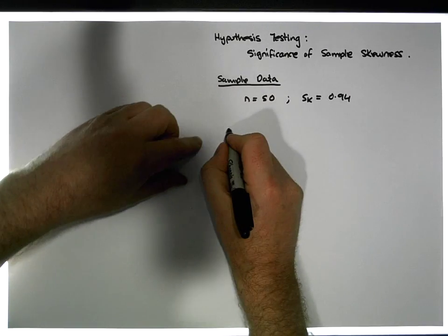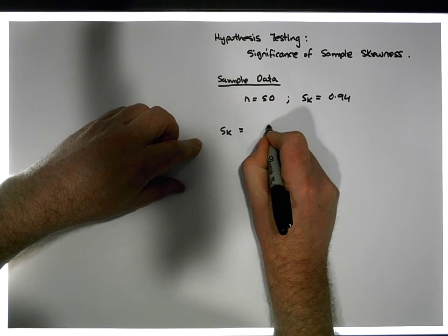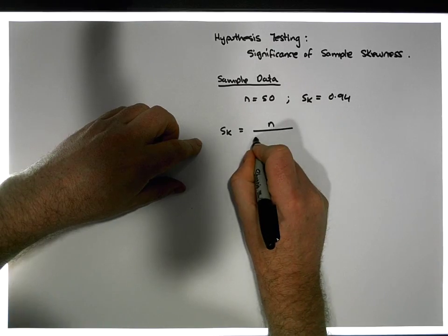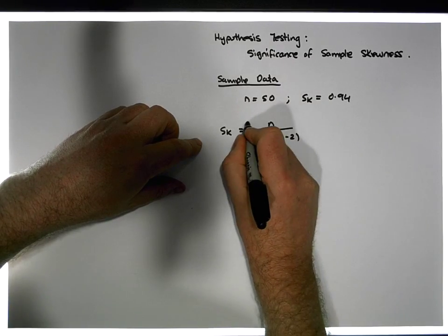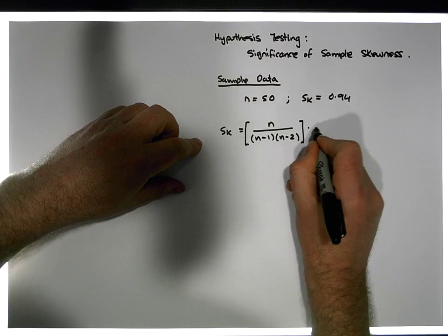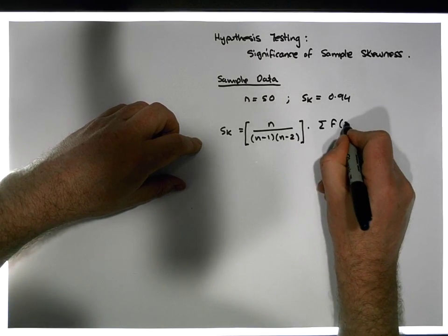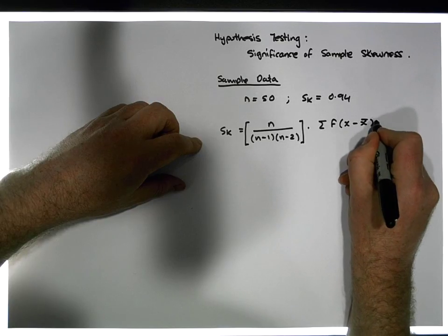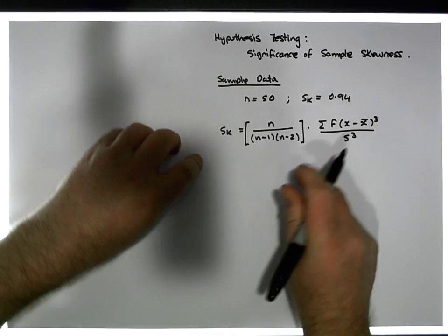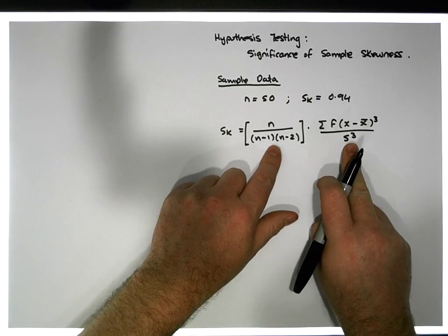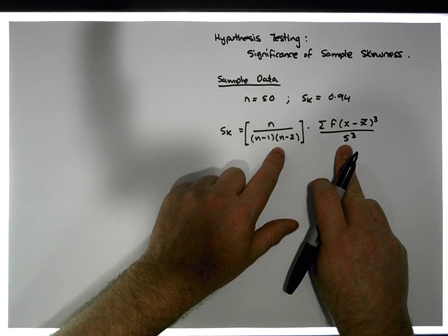The formula for calculating skewness is: sk = [n(n) / ((n−1)(n−2))] × [Σ f(x − x̄)³ / s³], where f represents frequencies. I've done that calculation in a previous video.